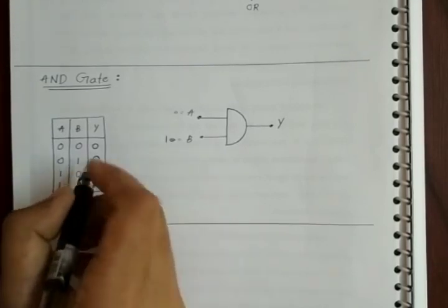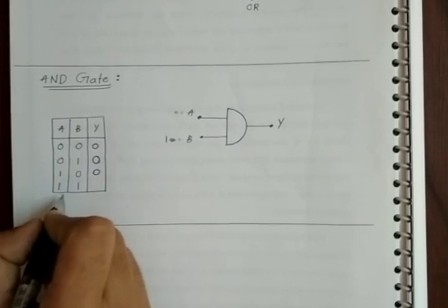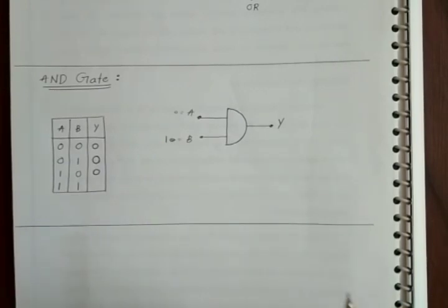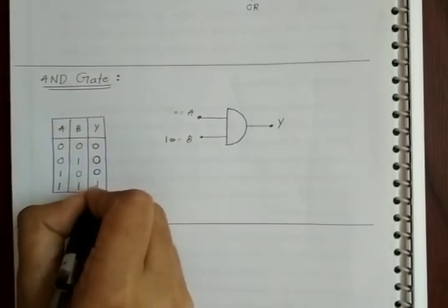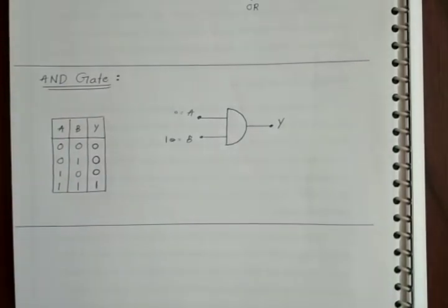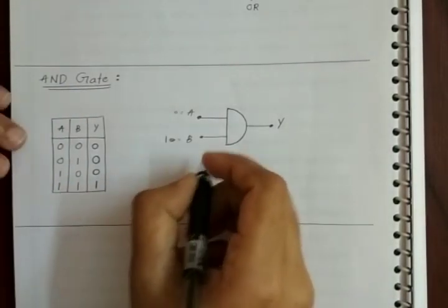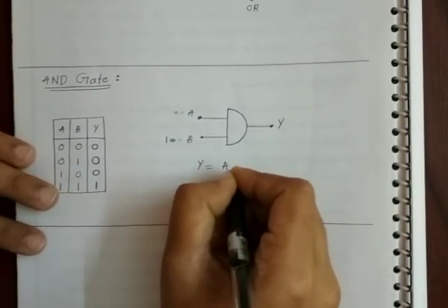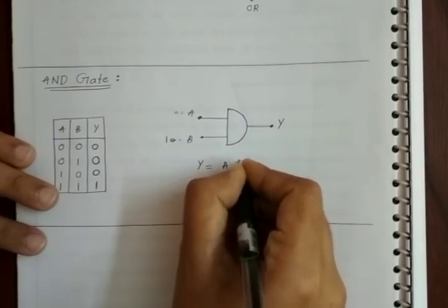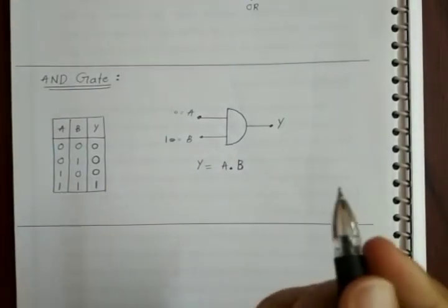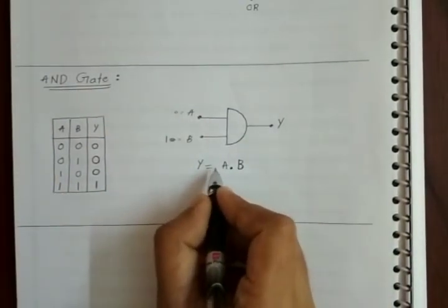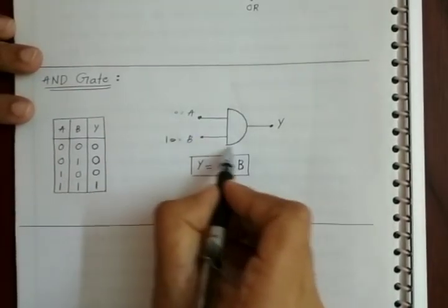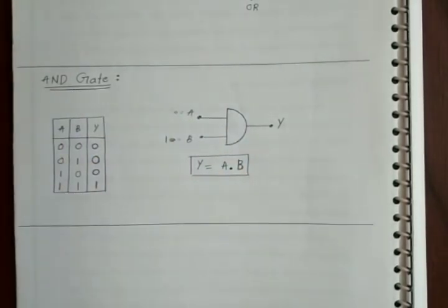Whenever you see A and B written together like this, it means A AND B. So this is the Boolean expression for the AND gate. This is the symbol and this is the truth table for the AND gate.